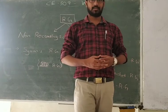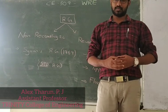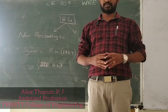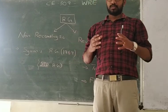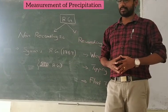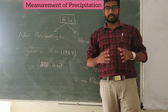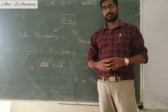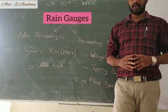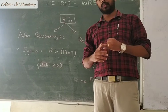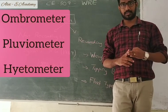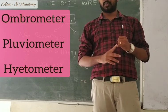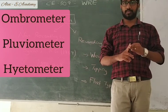Hi everyone, welcome back to the lecture on water resource engineering. In this lecture, we will discuss measurement of precipitation. Precipitation or rainfall is measured using rain gauges. Rain gauges are also known as ombrometer, plurinometer, or hydrometer.